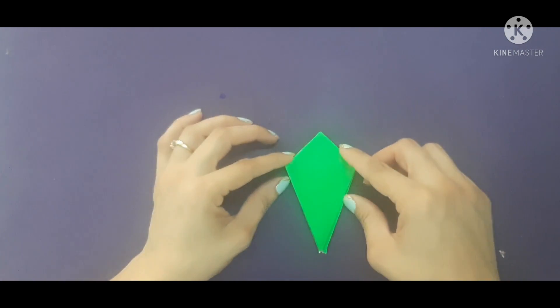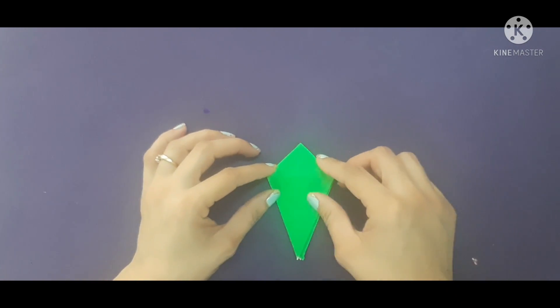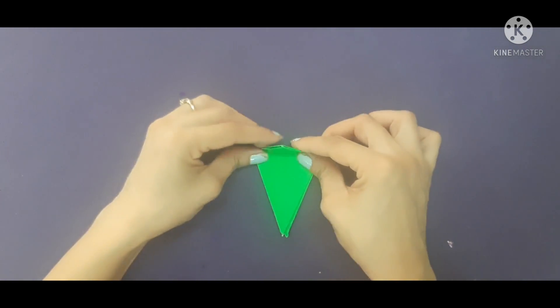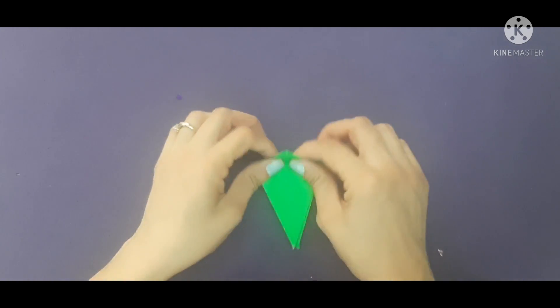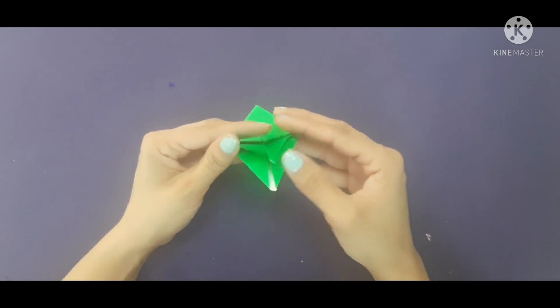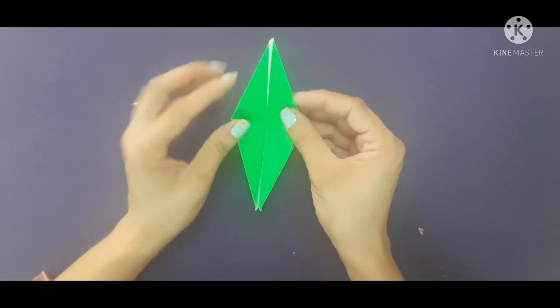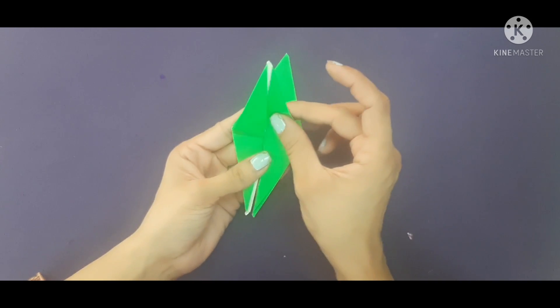Same from this side. We have to fold it from both sides. Now fold from here and you will get the line. Now what you have to do? Open it like this. And from here also, you will open like this.